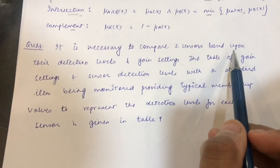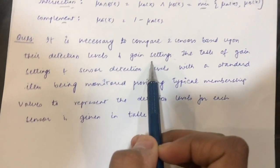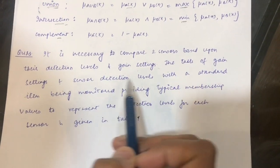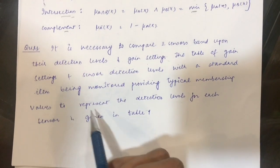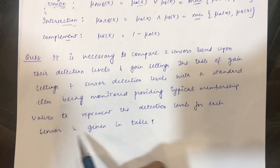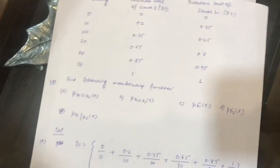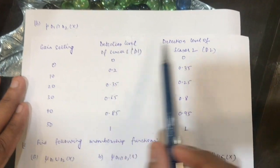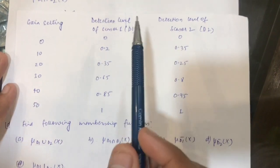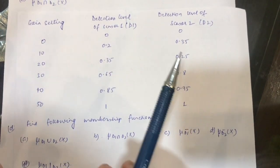Let us see a question. It is necessary to compare two sensors based upon the detection levels and gain settings. The table of gain settings and sensor detection levels with the standard item being monitored provides typical membership values to represent the detection levels for each sensor. We have been given this table where gain setting values and detection level values of D1 and D2 are shown.